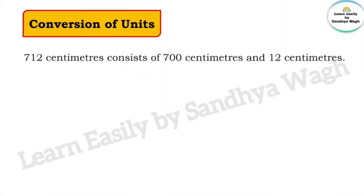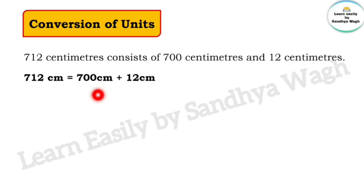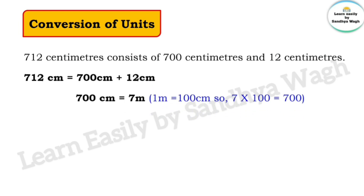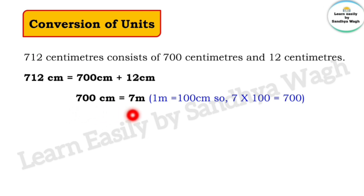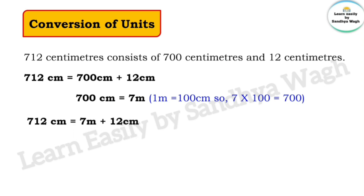Next is 712 cm. It consists of 700 cm and 12 cm. 700 cm means 7 meters, because 1 meter is equal to 100 cm, so 7 multiplied by 100 is equal to 700. Therefore, 712 cm is equal to 7 meters and 12 cm.